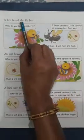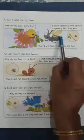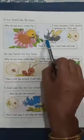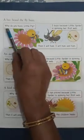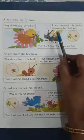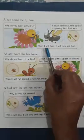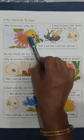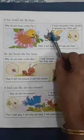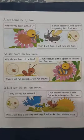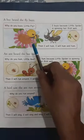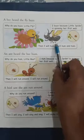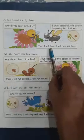Now next page. A bee heard the fly buzz. A bee heard the buzzing sound of this fly. Then this bee asked, why do you buzz, little fly? Then little fly said, I buzz because little spider is spinning her first web. Then bee said, then I will hum. I will hum and hum. Hum means the sound of this bee is called hum. Then this bee said, I will hum and hum.